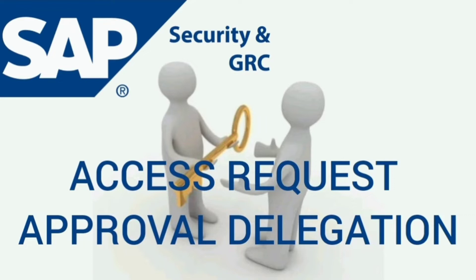Sometimes we may come across a situation where the manager, role owner, or FFID owner may be out of office and unavailable for a certain period of time. When the approver is unavailable, all the access requests which are pending for that approver will be in the decision pending state. To avoid this situation, some approvers want to delegate their tasks to another approver so that they can approve the request on behalf of them. This is feasible in GRC Access Control using the option approver delegation.